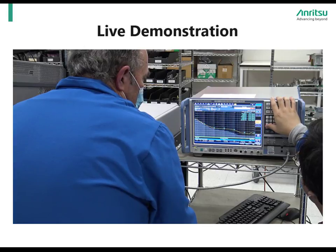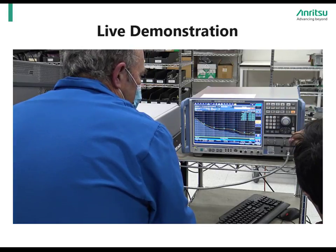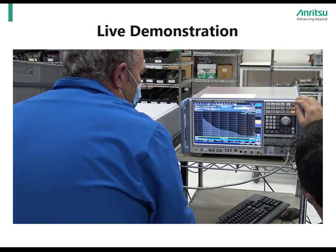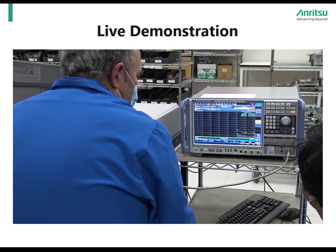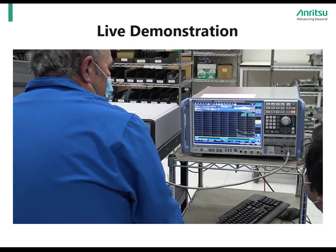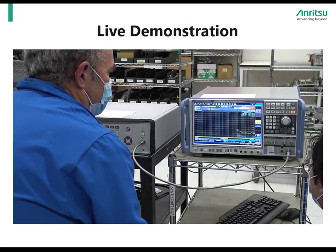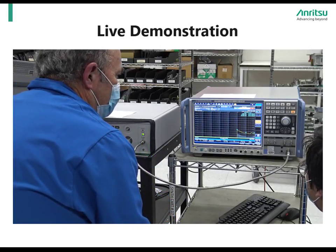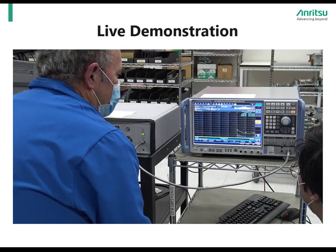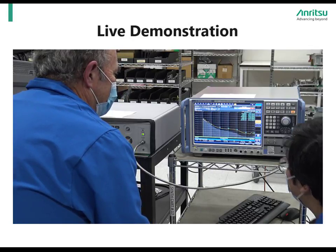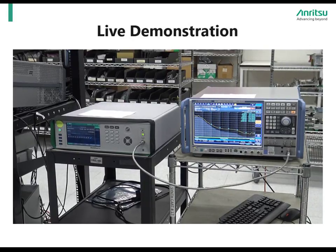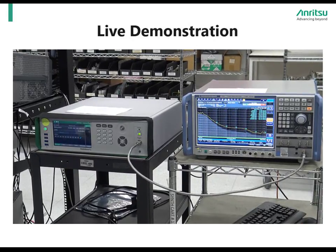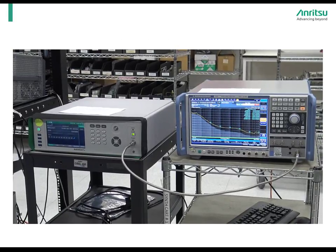Here we have a live demonstration of a standard MG36221A connected to a dedicated phase noise analyzer. We find it helpful for users to see an actual setup and performance of an instrument beyond the usual specifications found in a technical data sheet. In this demonstration, two engineers are performing a phase noise measurement. We can clearly see from the output of the phase noise analyzer a clean phase noise plot with a clear pedestal region. The Rubidium Signal Generator is set to 10 GHz with a 10 dBm output signal.